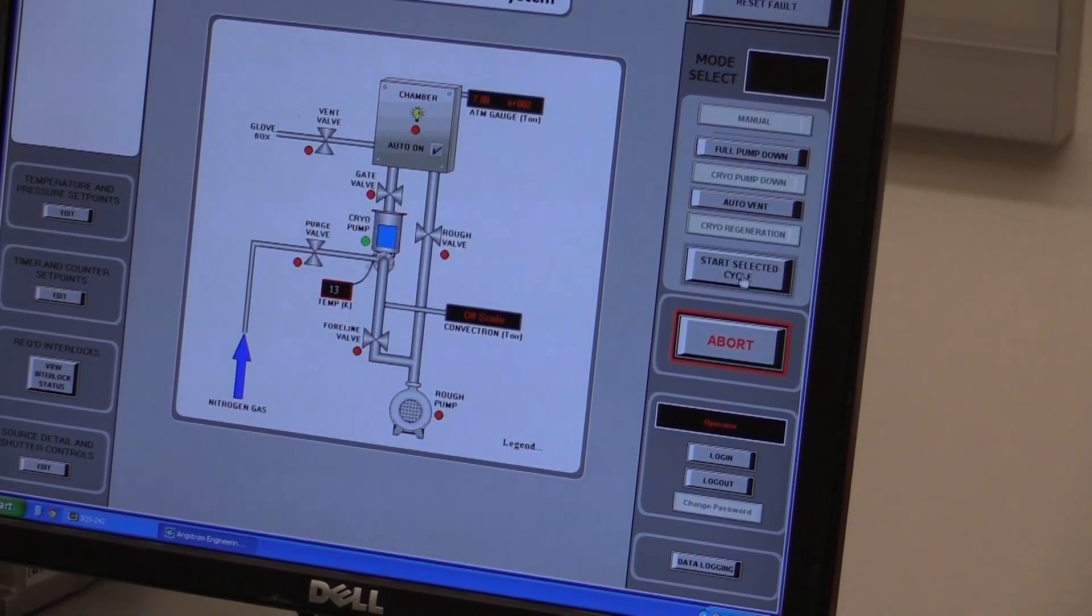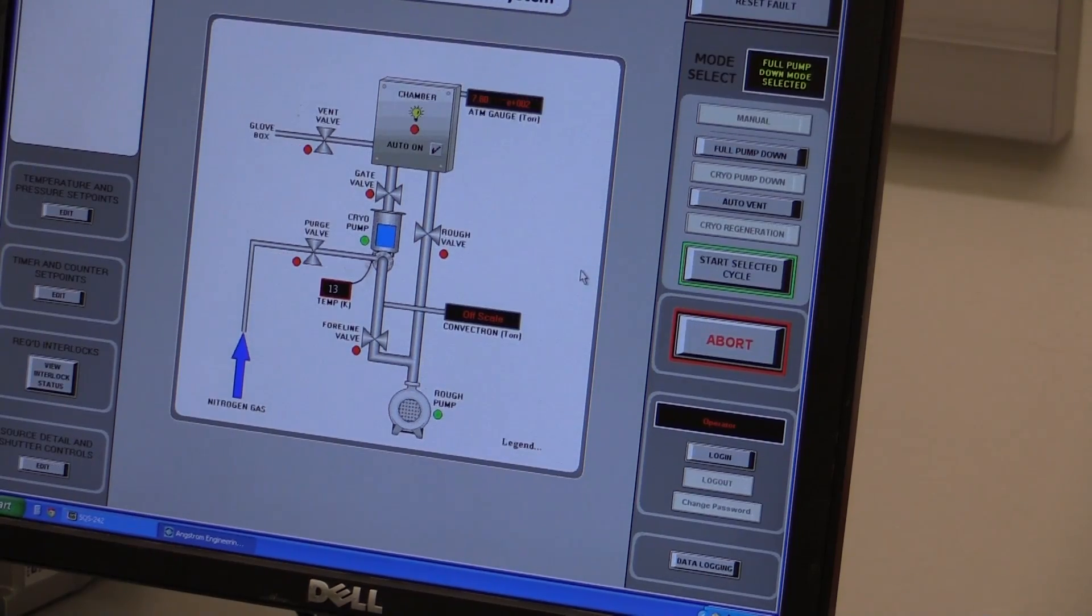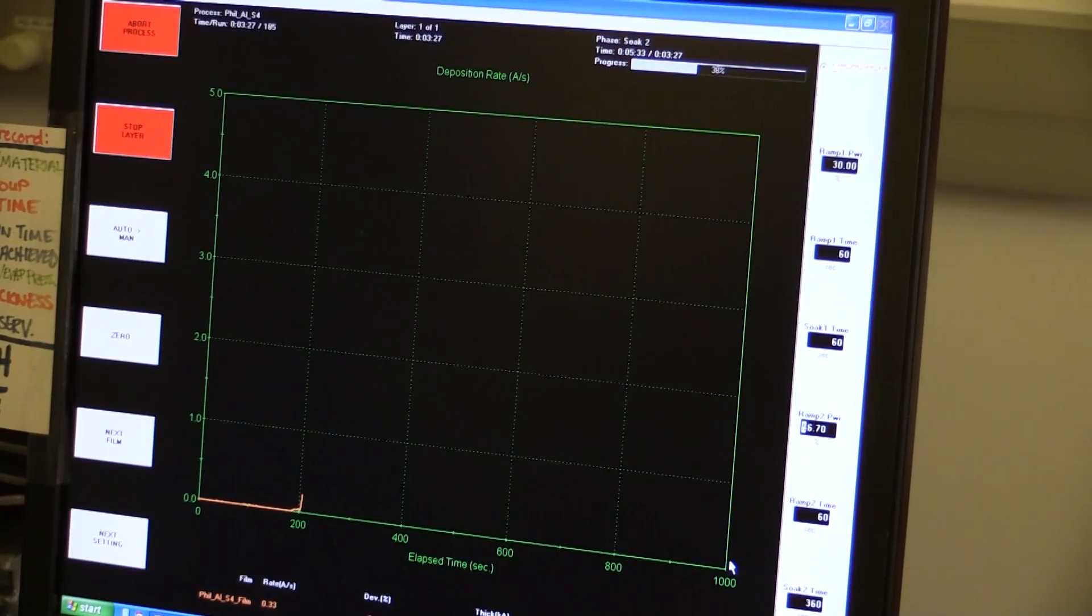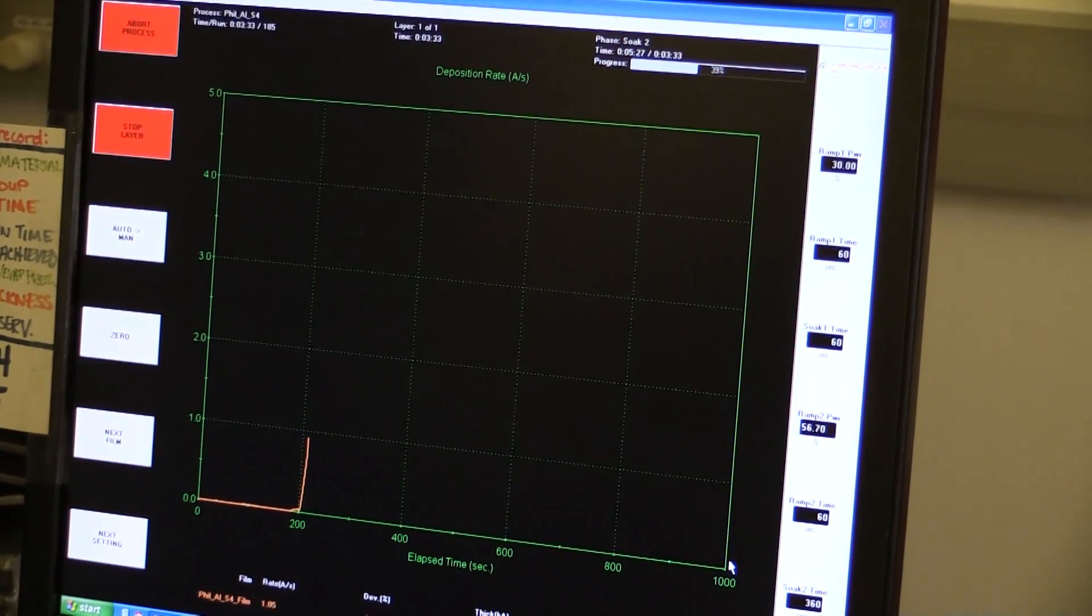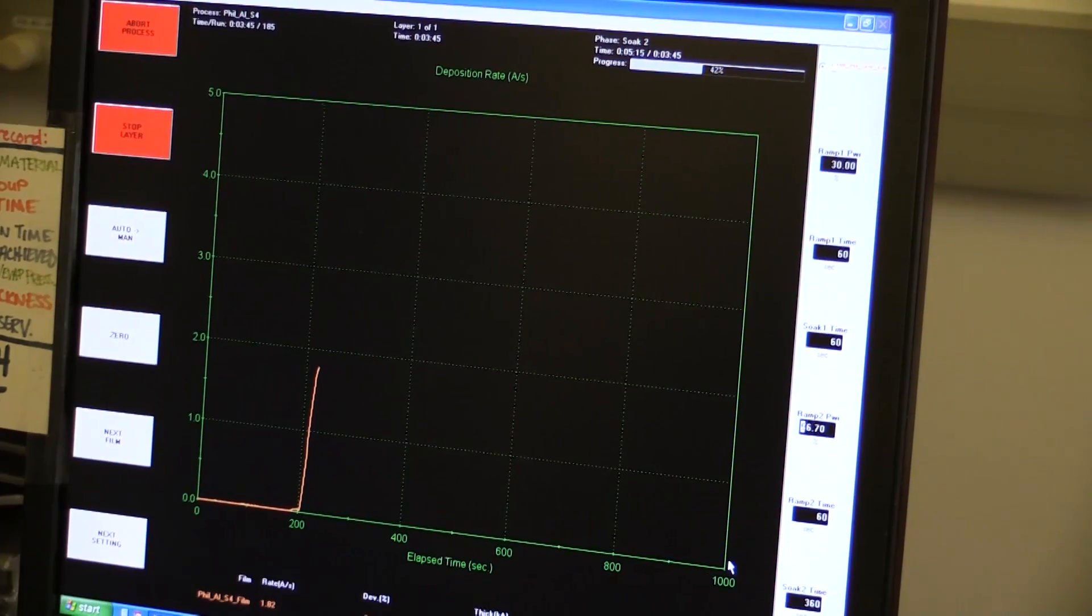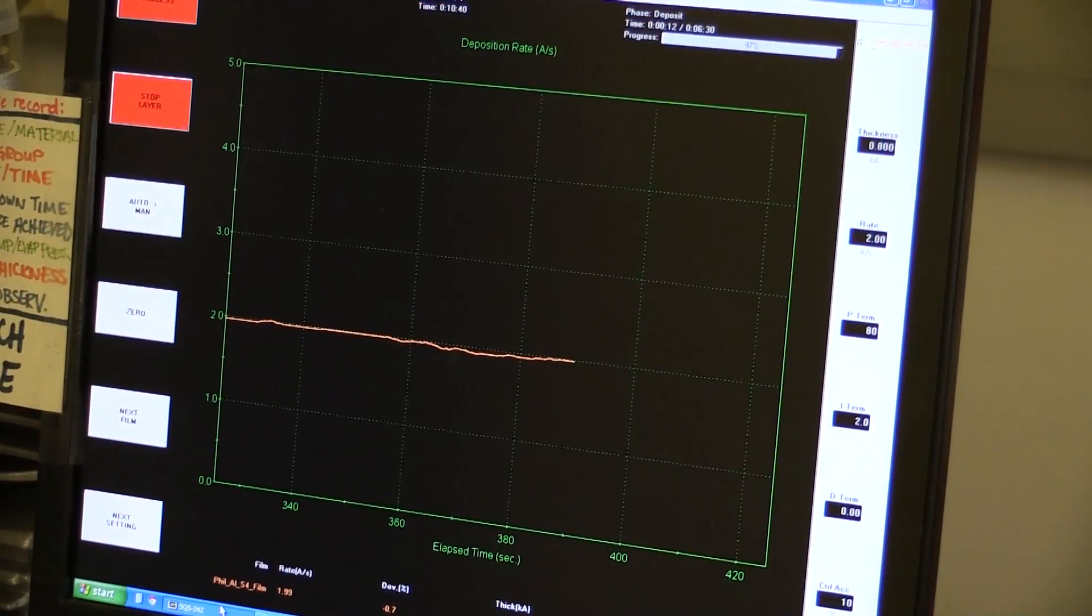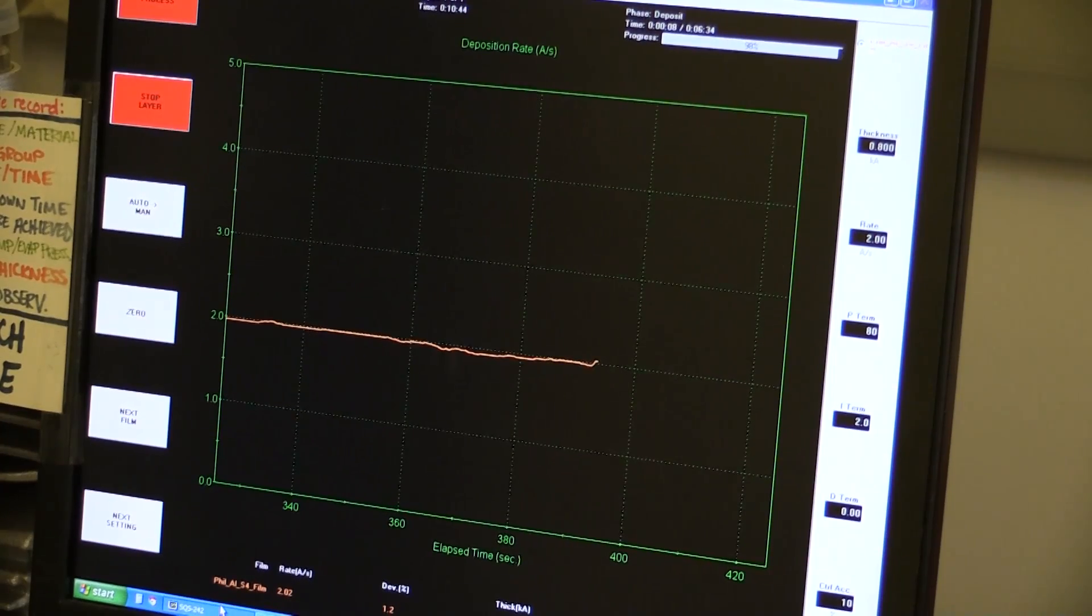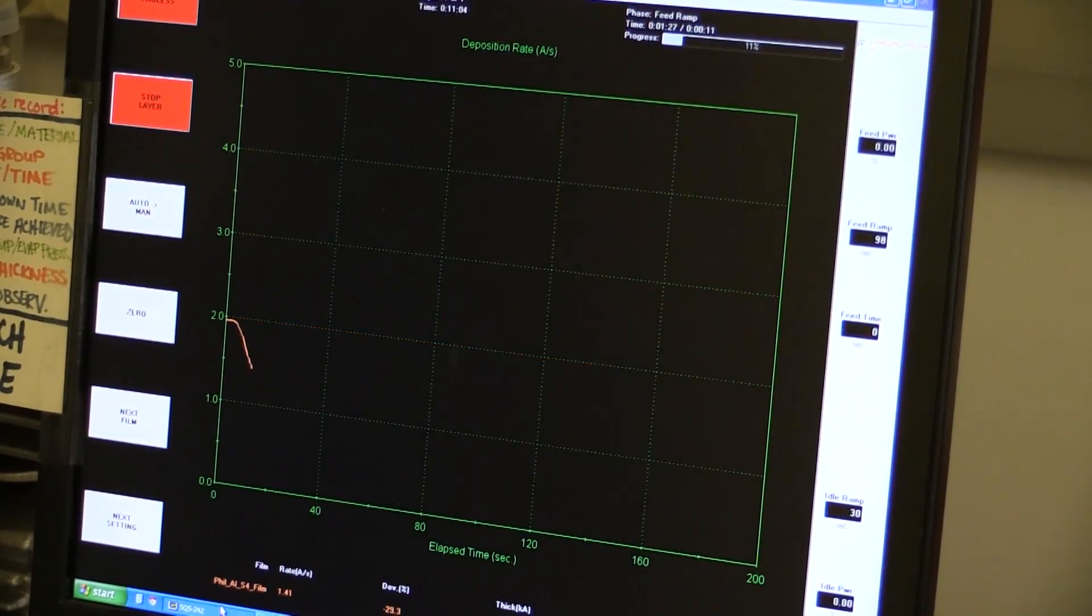Now we deposit the gold contact at a deposition rate of 2 angstroms per second. We start by heating the metal at a slow evaporation rate to burn off impurities. Once we reach the desired rate for deposition, we begin depositing the gold by opening a shutter, which will allow metal vapor to condense on our substrate through the pattern in the mask. Once we reach the thickness that we want, the shutter closes and we ramp down the power.